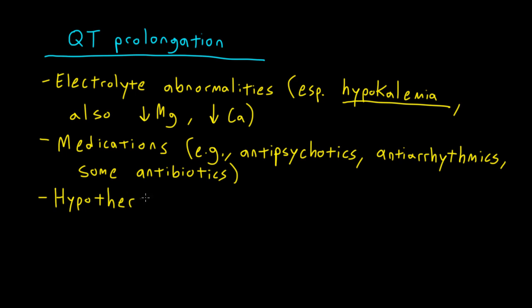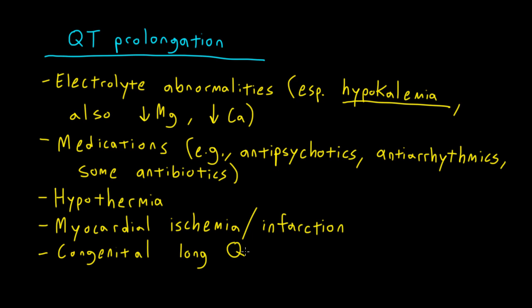Hypothermia can also cause QT prolongation because of its impact on ventricular repolarization. And a number of other acute processes can cause QT prolongation, including acute myocardial infarction or ischemia. Additionally, some patients can have a congenital long QT syndrome. It's important to know that this list isn't all-inclusive. But this is just to give you an idea of important causes.